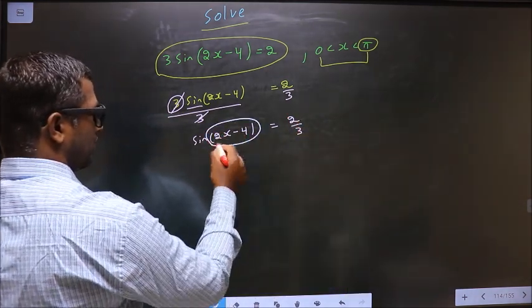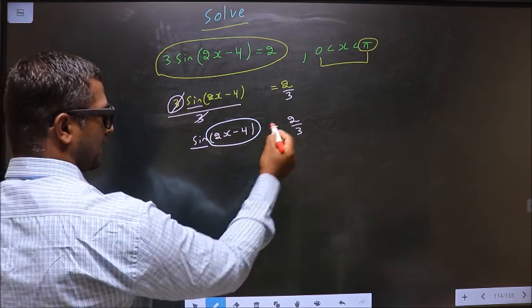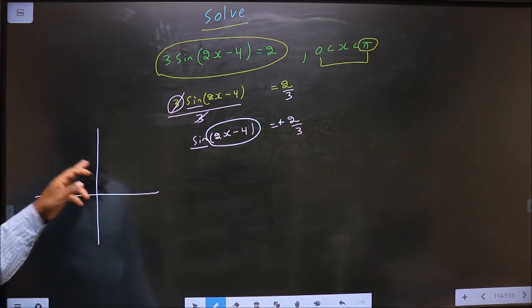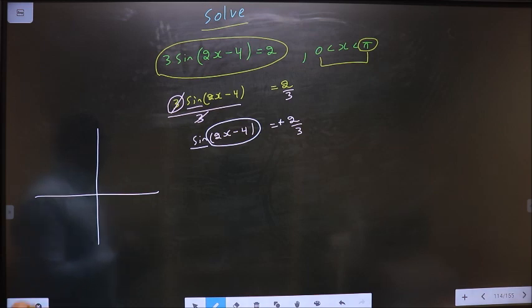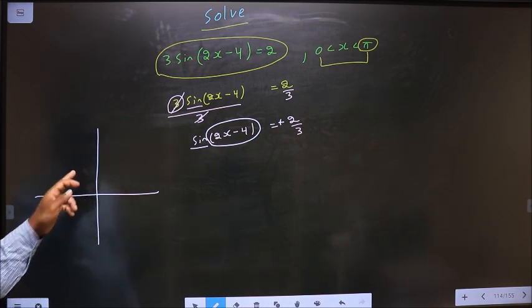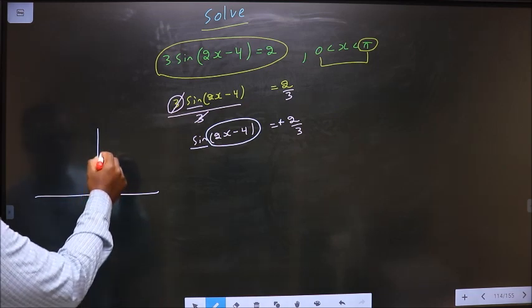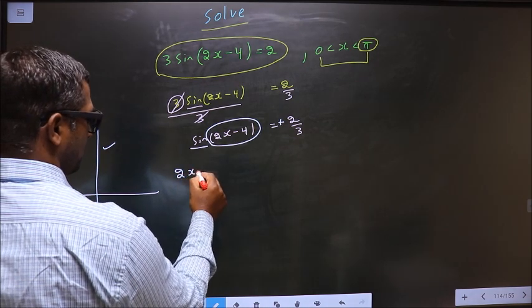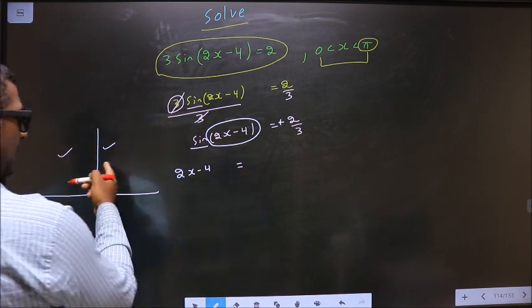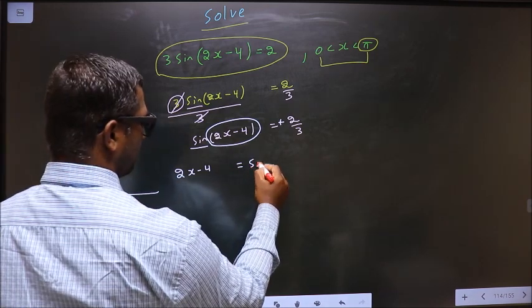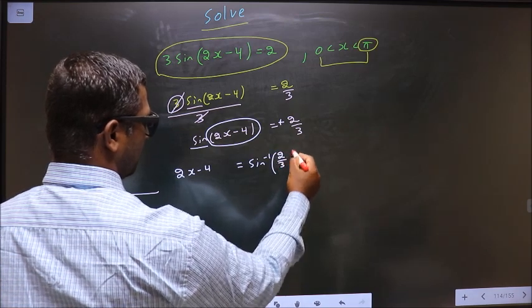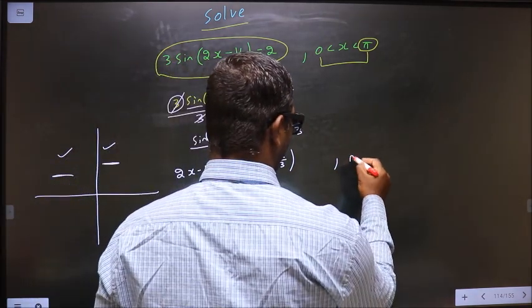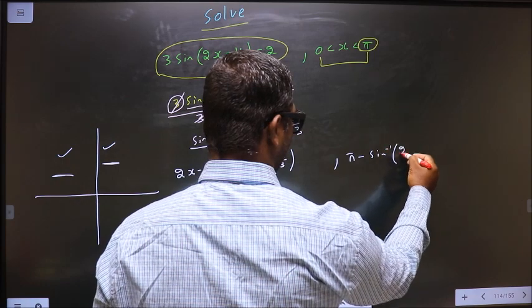Now to get the values for this, here we have sin and it is positive. So you should check in what all quadrants is sin positive. It is all silver tea cups. Sin is positive in the first and in the second. So 2x - 4 equals: to get an angle in the first we do directly sin inverse 2/3, to get an angle in the second we do π - sin inverse 2/3.